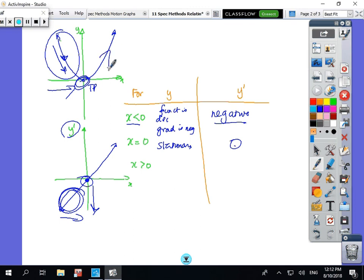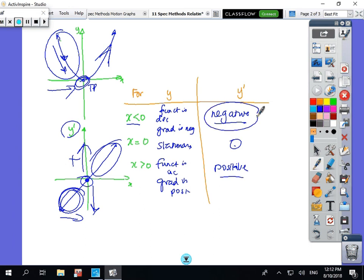The function is increasing, the gradient is positive, and these numbers this way are all positive. When we have negative y dash, the function is decreasing. When y dash is positive, the function is increasing, and when y dash equals zero, the function is stationary.